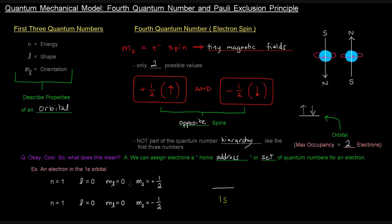m sub l has to equal 0. m sub s can be plus 1 half, which would be represented by this up arrow. So this is the home address, or the set of quantum numbers, that describes that particular electron, the pink one.